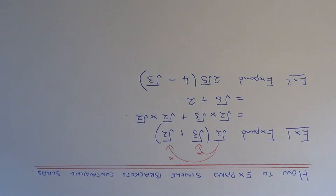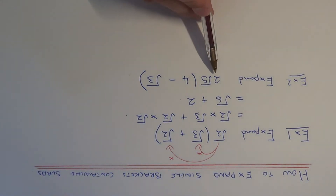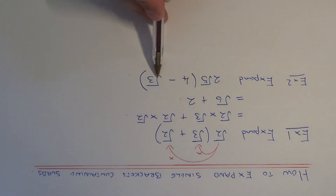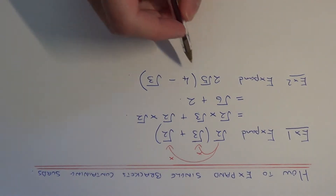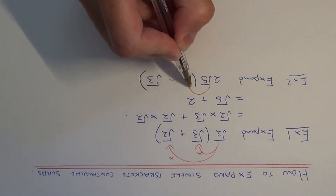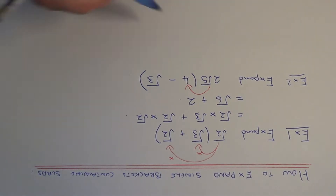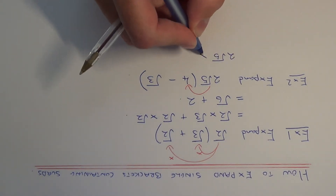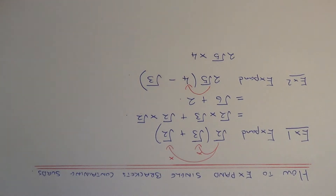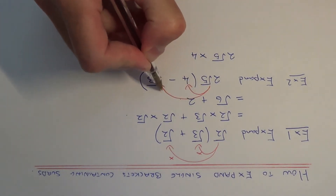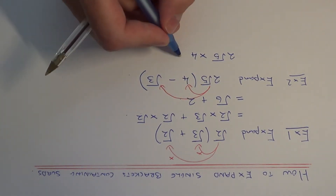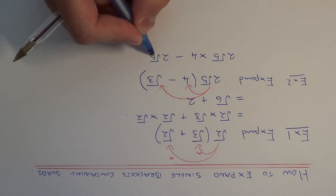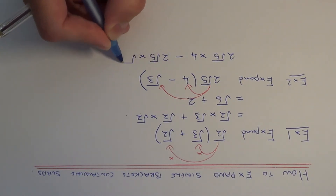So let's move on to example 2. This time we have to expand 2√5(4 - √3). So first of all we need to multiply the 2√5 by the 4, and for the second term we need to multiply the 2√5 by the √3.